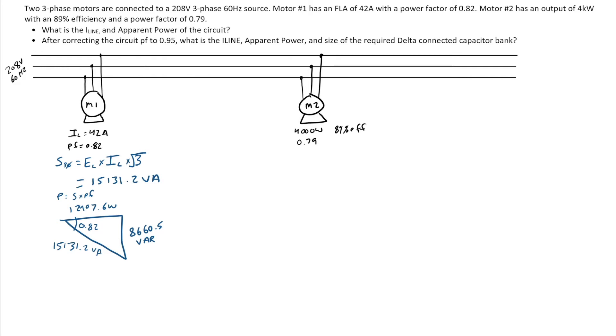Then I'm going to move into motor two. Now this one's a little bit trickier. I'm told it's a 4,000 watt motor. Now when a motor is rated in wattage, that's always talking about its output. So its output is 4,000 watts at an 89% efficiency. But when I'm talking about current going into the motor, I need to turn that into an input.